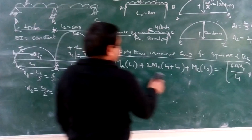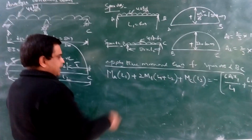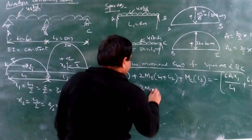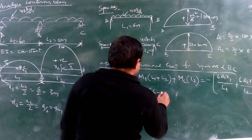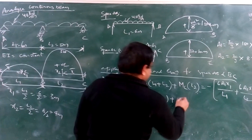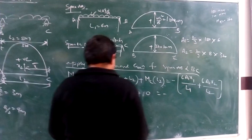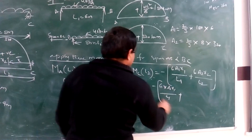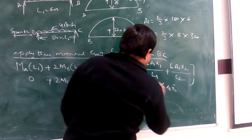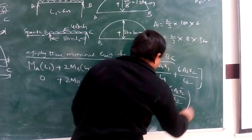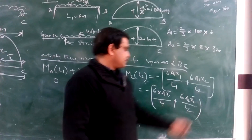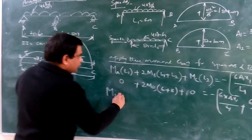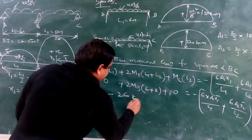We now find the value of the fixed-end bending moment at B. Since MA and MC are both 0, we have 2·MB·(L1 + L2) = minus 6·(A1·x1/L1 + A2·x2/L2). The span terms are 6 plus 8. By equating and solving this equation, we get the fixed-end bending moment at B equals minus 260 kNm.